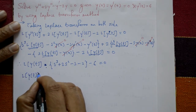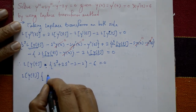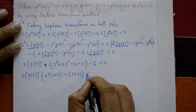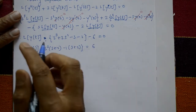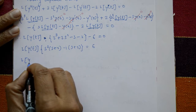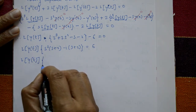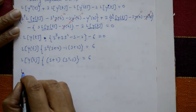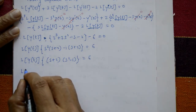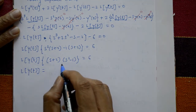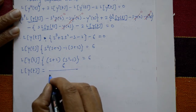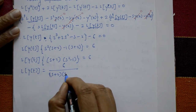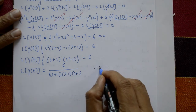Factoring out, we get L{y(t)}·(s+2)·(s²-1) = 6. Therefore, L{y(t)} = 6 / [(s+2)·(s-1)·(s+1)], using the difference of squares formula s²-1 = (s-1)(s+1).